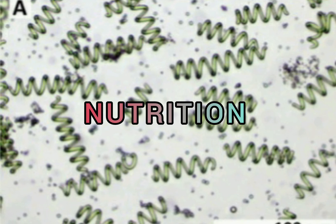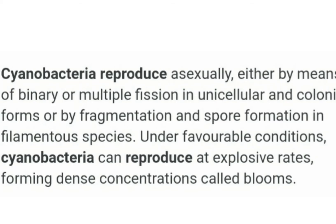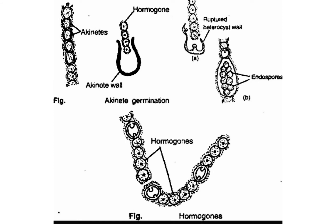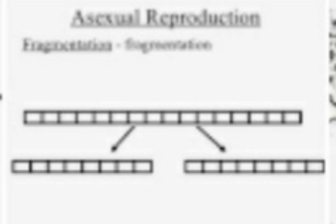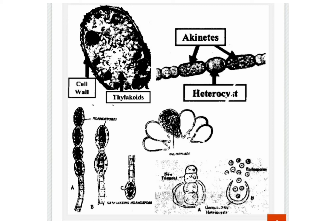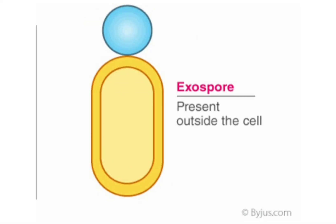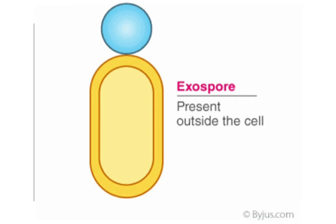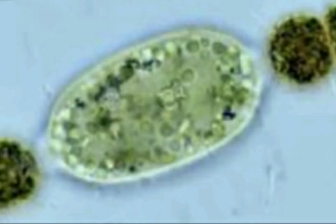Regarding nutrition, cyanobacteria are mostly photo-autotrophic and contain chlorophyll A and other photosynthetic pigments. For reproduction, they show asexual and vegetative modes; sexual reproduction is absent. Binary fission occurs in unicellular forms, while fragmentation occurs in colonial and filamentous forms — the small fragments formed are known as hormogonia. Asexual reproduction also involves endospore formation, exospore formation, and akinetes. Endospores are produced endogenously within the vegetative cell, exospores are formed exogenously, and akinetes are thick-walled spores with stored food material.